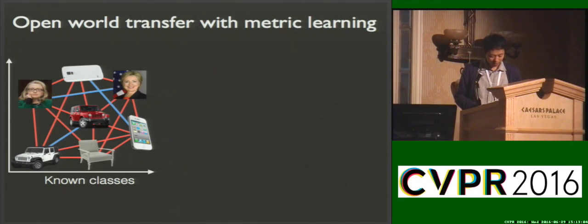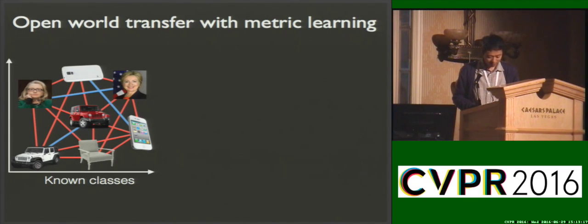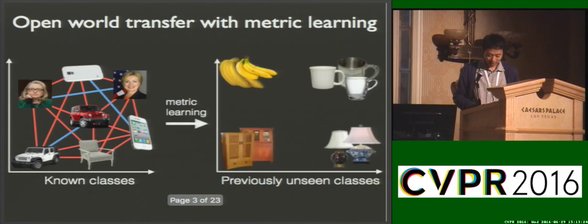In transfer learning and metric learning, the goal is to learn the distance metric from labeled examples so that examples in the same class are put close to each other, and examples from different classes are put farther apart in some embedding space. Here, the blue edges mean the examples are from the same class and the red edges mean they're from a different class.